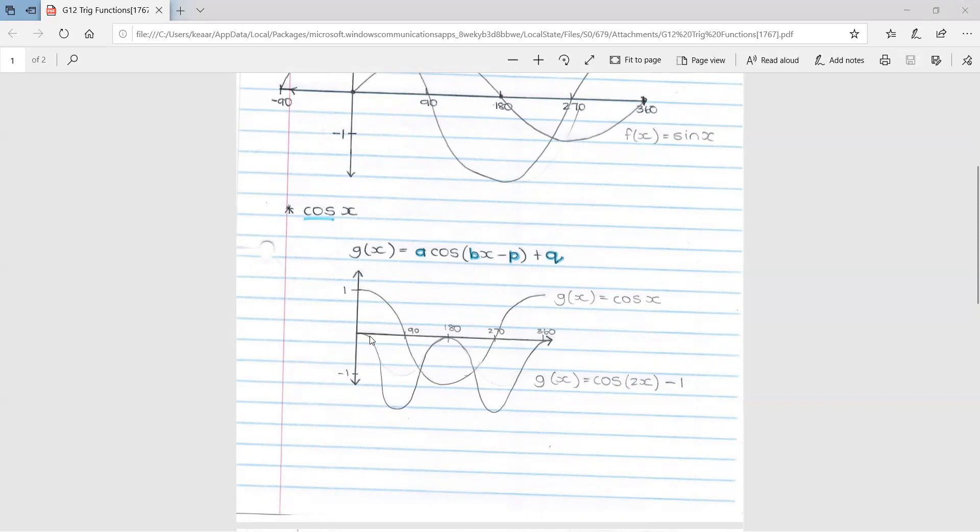So we have not shifted my graph left or right. It's still in the middle, even though the period is shrunk. It still starts at zero. However, with my q value, it doesn't start at one. It starts at zero. So it has shifted one unit down. Therefore, the minus one over here.